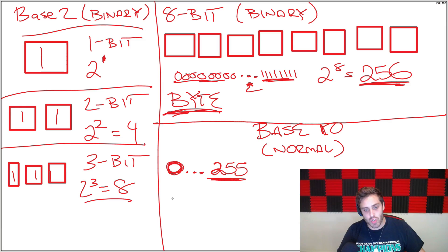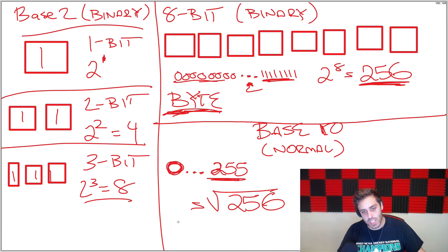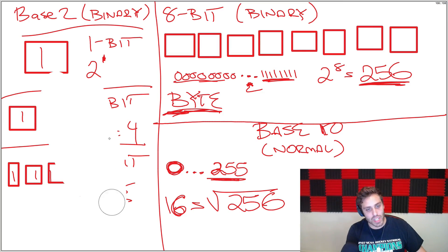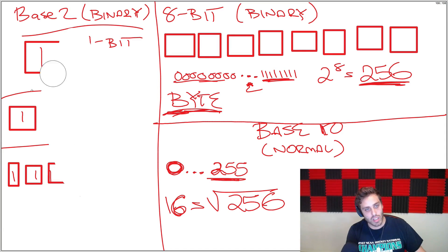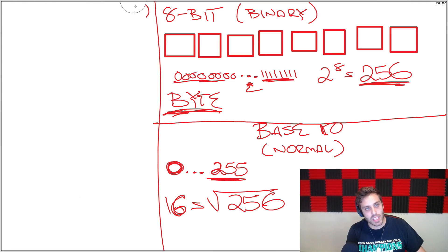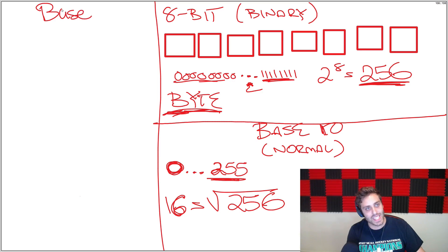Now let's look at an interesting property. If we take the square root of 256, we get 16. And instead of base 2 or base 10, let's look at the square root of 256, which would be base 16. This is also known as hex.